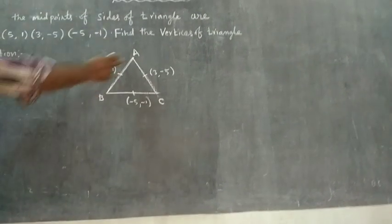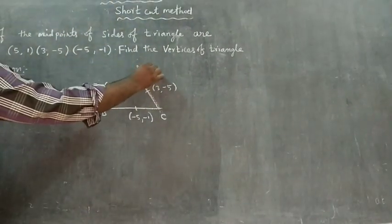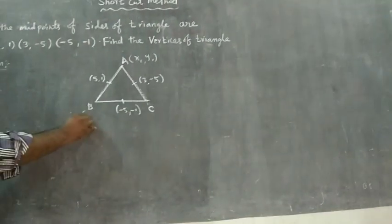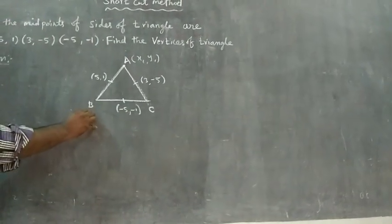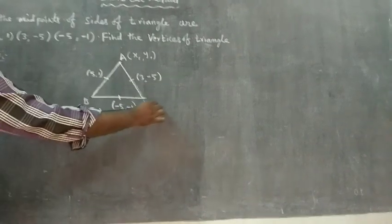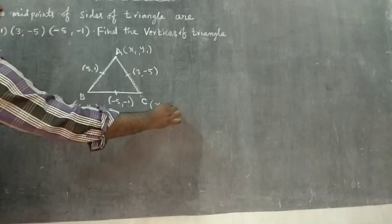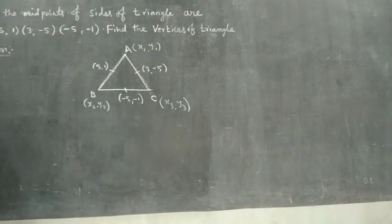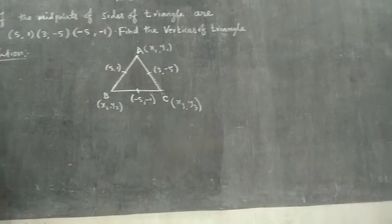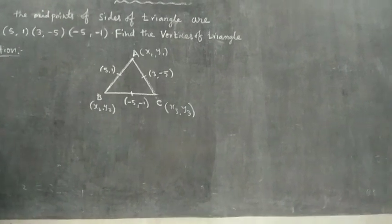The vertex A has coordinates (x1, y1), vertex B has coordinates (x2, y2), and vertex C has coordinates (x3, y3). The midpoints are (5,1), (3,-5), and (-5,-1).